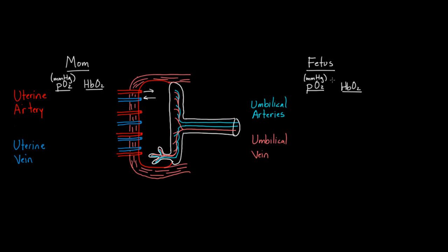What are the estimated numbers for dissolved oxygen in the uterine artery? We usually think of arteries as having about 100 mmHg of oxygen — that's a rough estimate. For hemoglobin at this point, about 98% is bound to oxygen given this high dissolved oxygen level. In the uterine vein, the number is about 40 mmHg, and about 75% of hemoglobin is bound to oxygen. These are the rough estimated numbers on the maternal side.